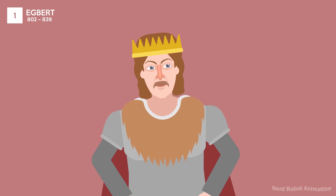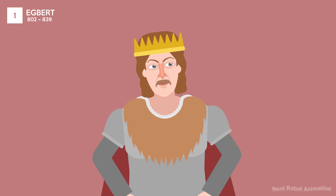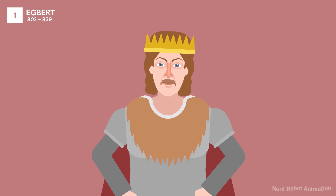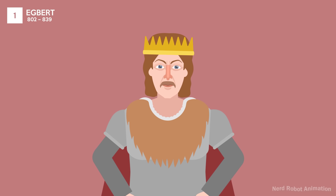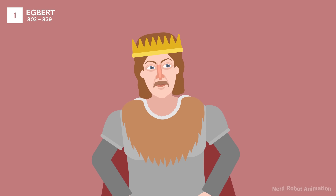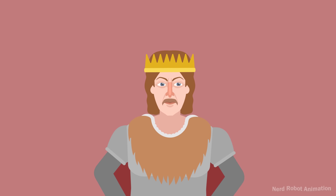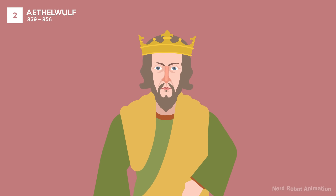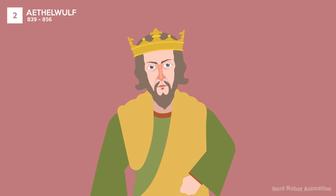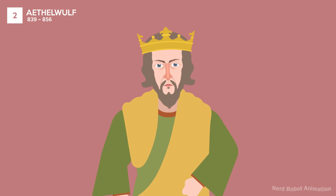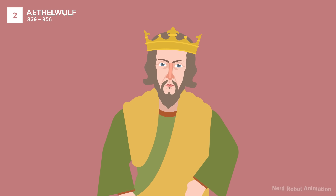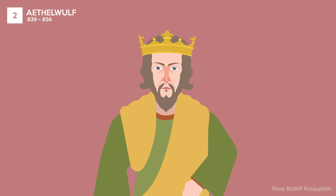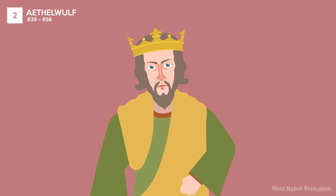Egbert, known as the first king of all England, unified the various Anglo-Saxon kingdoms. His reign marked the beginning of what would become the Kingdom of England. Aethelwulf is remembered for his pilgrimage to Rome with his youngest son, Alfred the Great. His reign faced constant Viking raids, which shaped much of his policies.